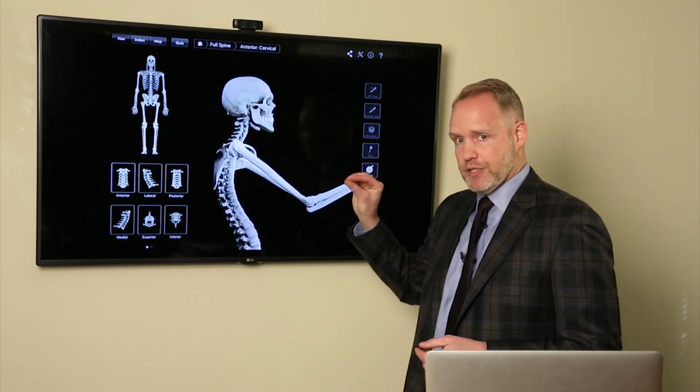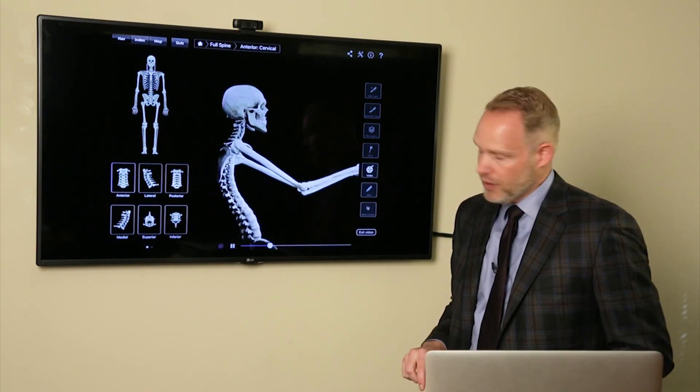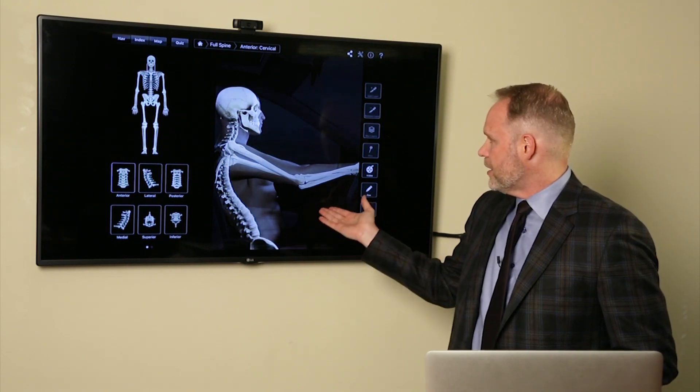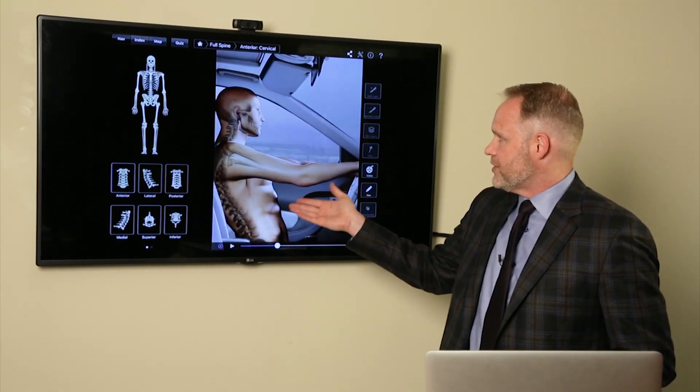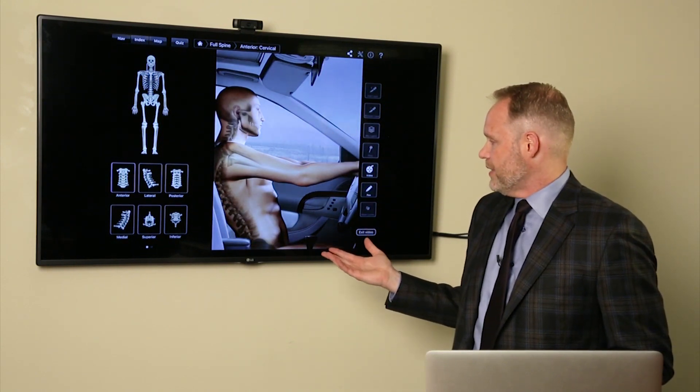So between each vertebral body or layer of bone, there's those discs. So we have an individual here. He's going to be seated in his car. Now we've added skin, so now he's clearly recognizable. And what happens if this individual is hit from behind?